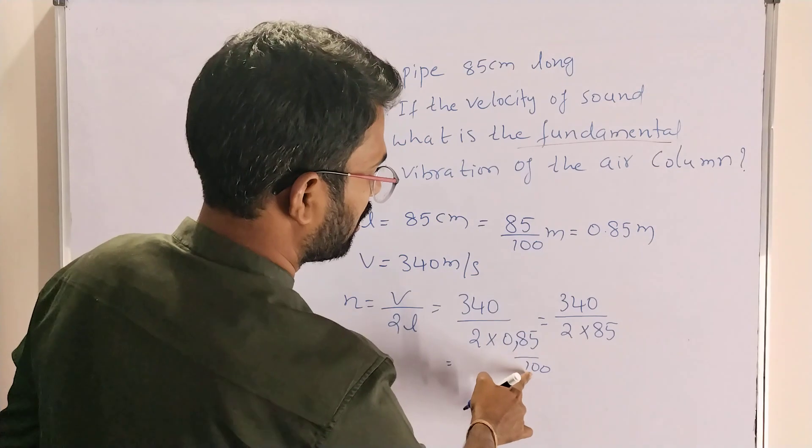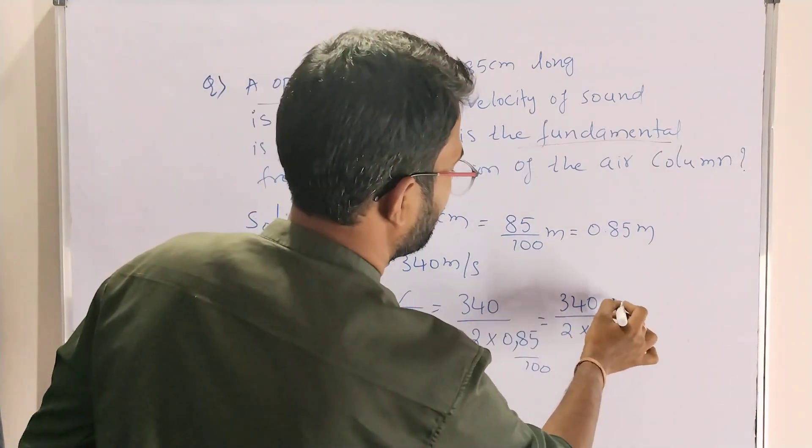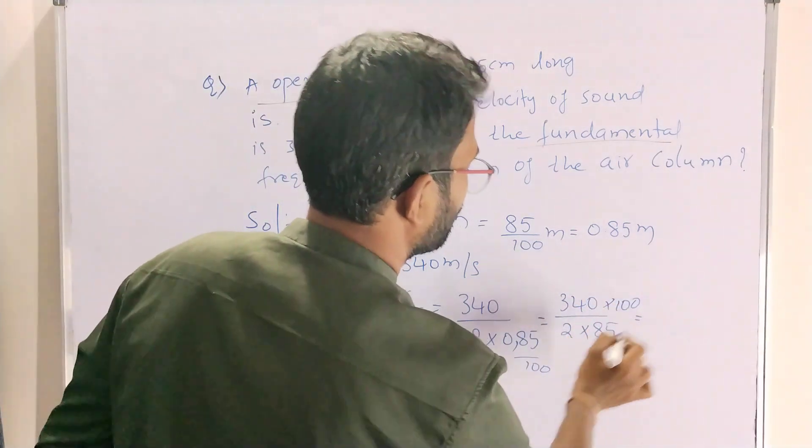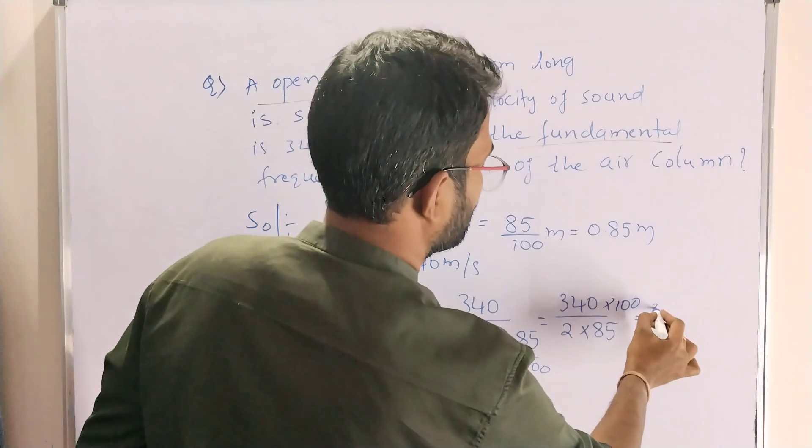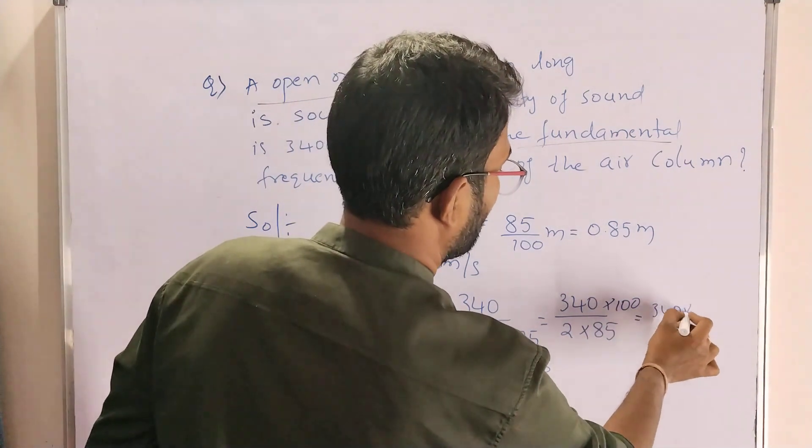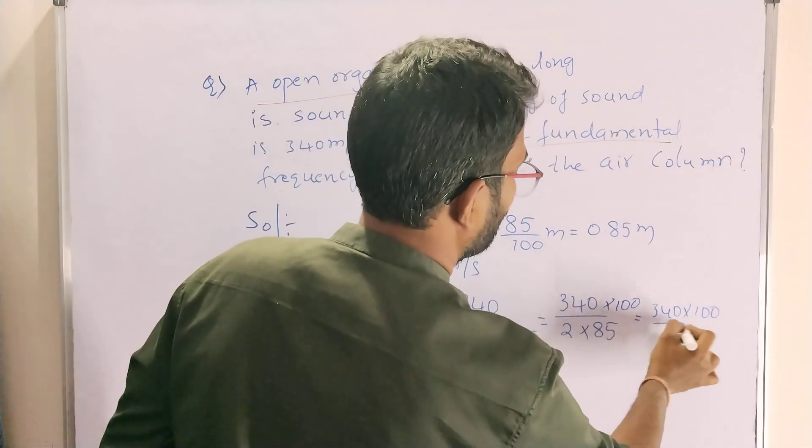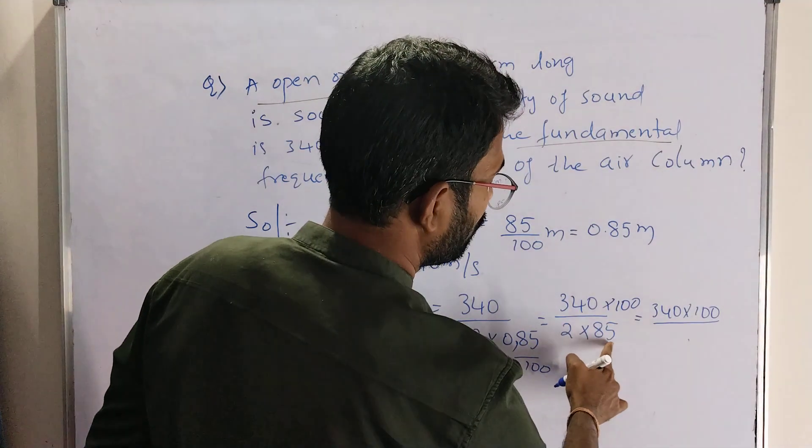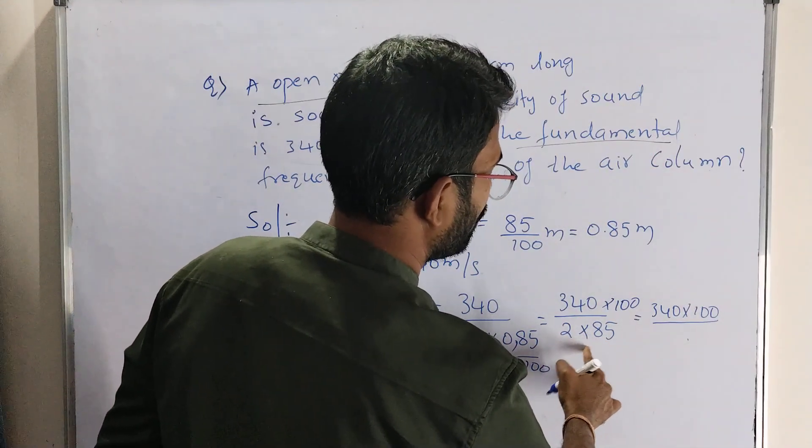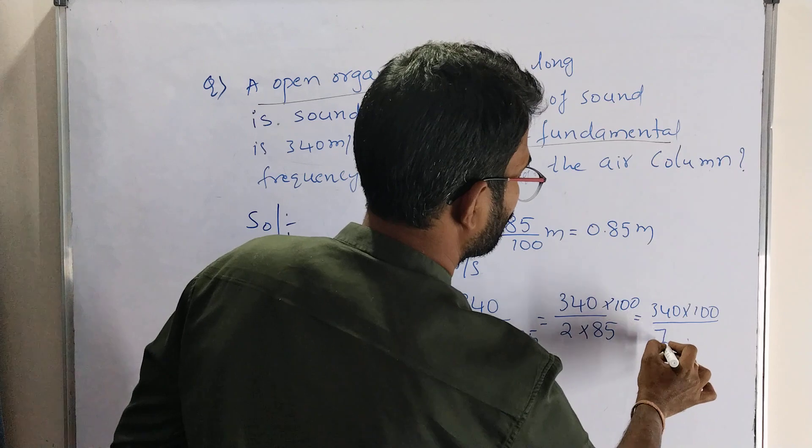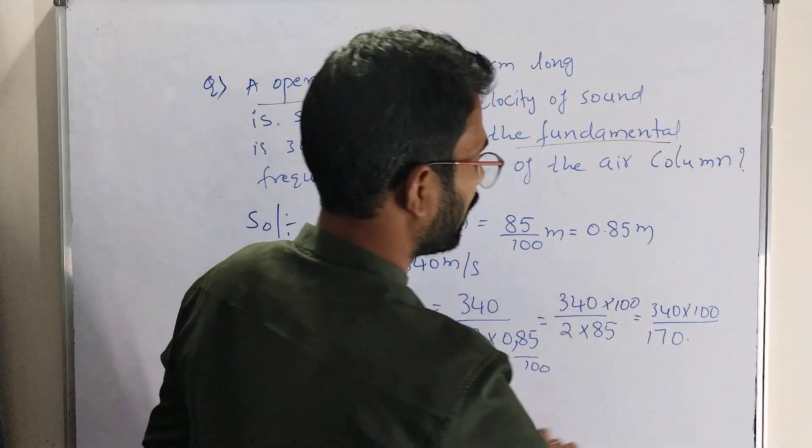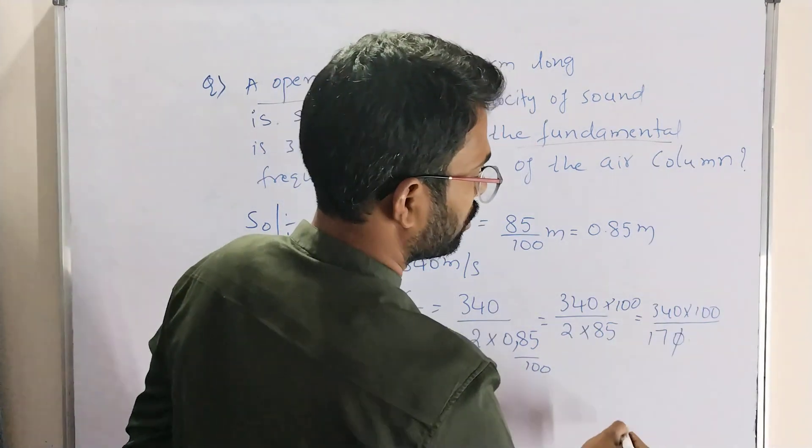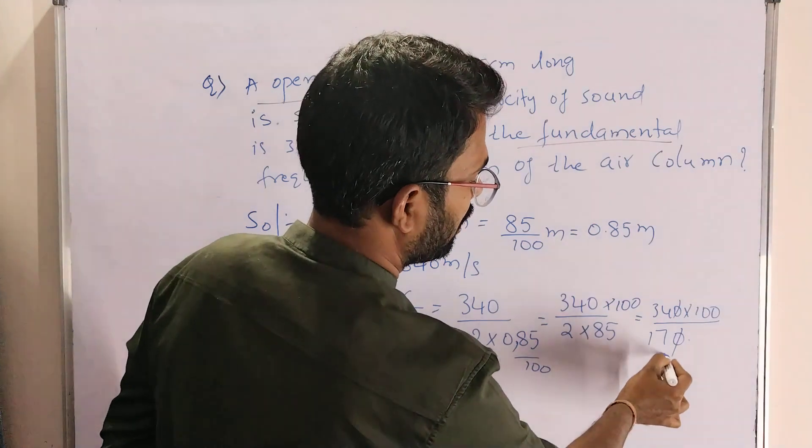Into 100, we can write 340 into 100 by 2 into 85. 2 into 85 is 170. This zero, this zero cancel. 17 ones are 17, twos are 34.